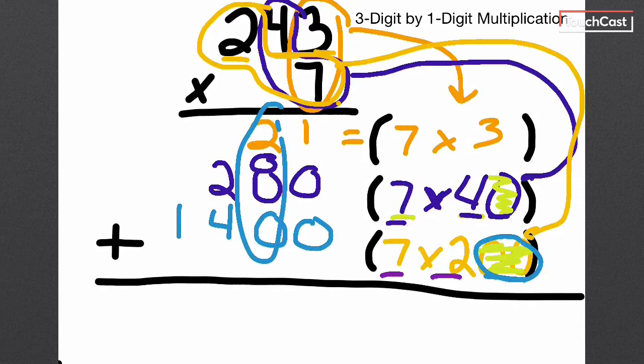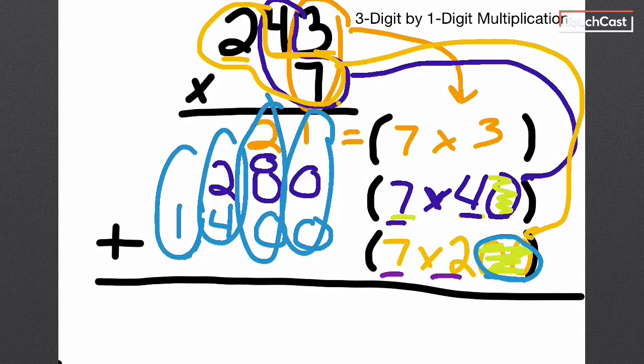Notice how my place values are perfectly lined up. My two and my eight, all of these here are perfectly lined up. Same thing with my ones, my hundreds, or my hundreds and my thousands.